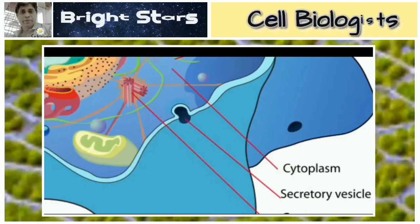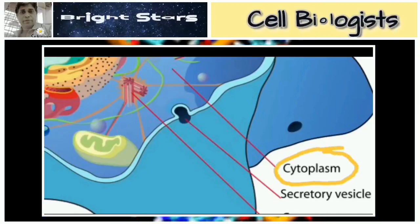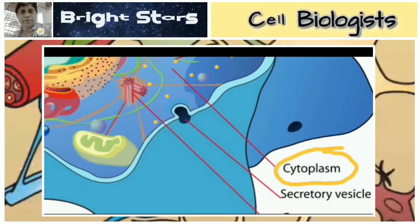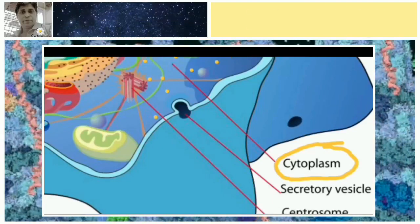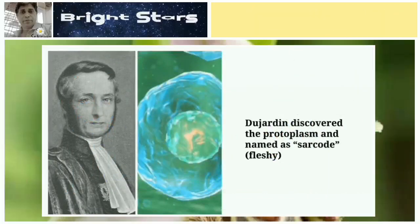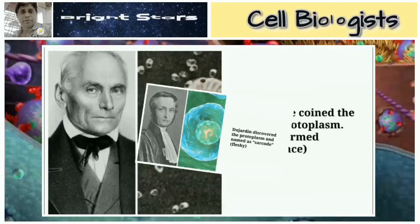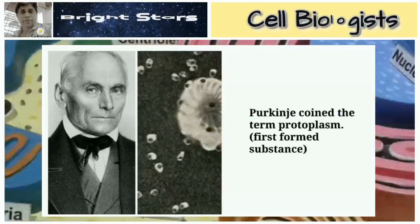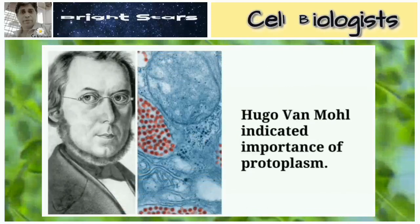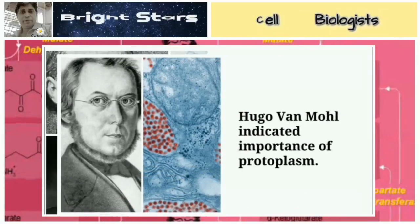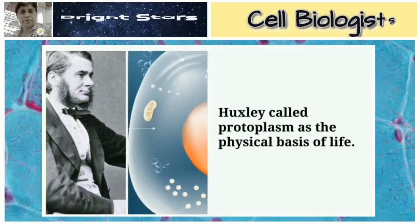The jelly-like substance present within the cell is called protoplasm or cytoplasm. Dujardin discovered the protoplasm and named it 'sarcode,' meaning fleshy substance. He coined the term protoplasm, meaning 'first formed living substance.' Hugo von Mohl indicated the importance of protoplasm, and Huxley called protoplasm the physical basis of life. Hertwig established protoplasm theory.